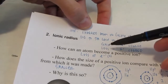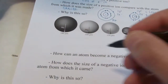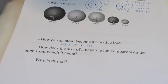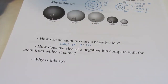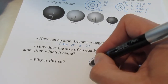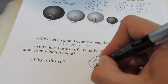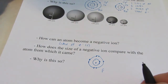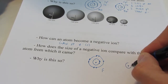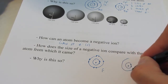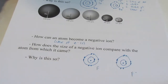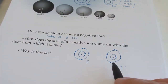What about negative ions? Gaining electrons causes an ion to have a negative charge — this is due to the gain of one or more electrons. How does the size of a negative ion compare with the atom from which it came? Let's pick on fluorine. Fluorine has nine electrons: two in the first energy level and seven in the second. That's plain old fluorine — nine protons and nine electrons. Now what if it gains an electron to become the fluoride ion? Its nucleus doesn't change, and it still has two electrons in the first energy level, but the second energy level now has eight electrons.